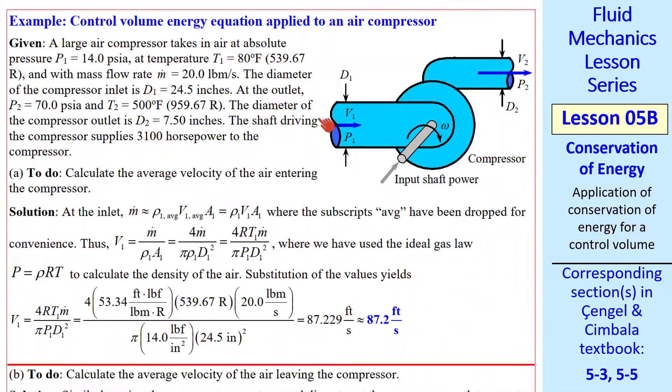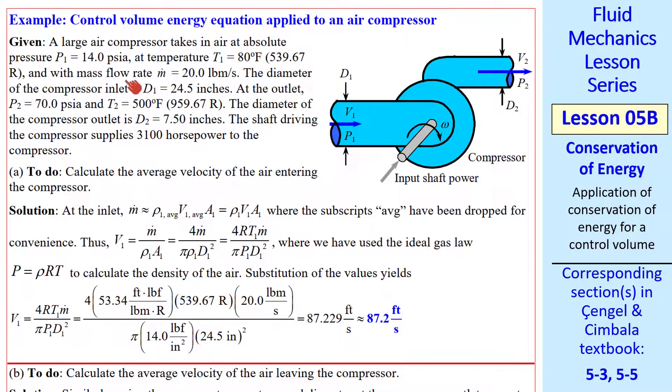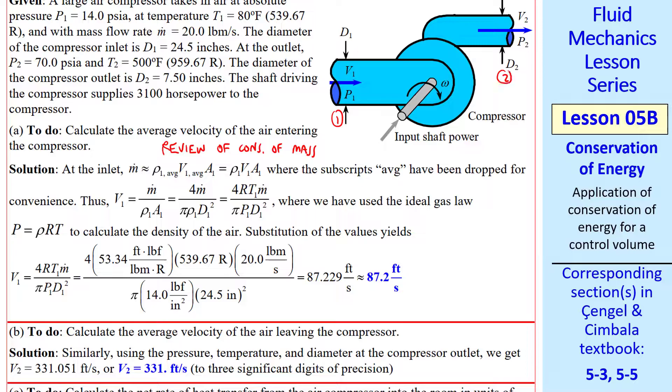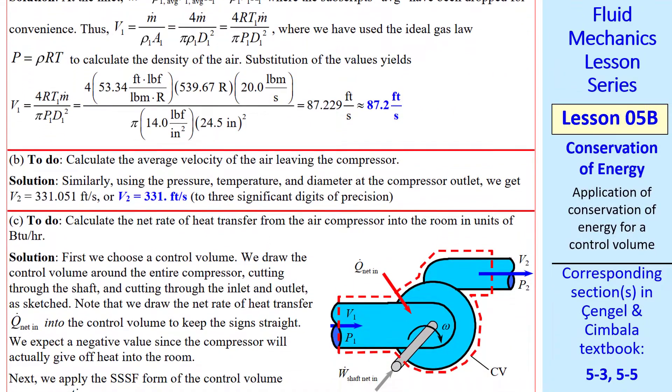Now we're ready to do an example. We can analyze things like compressors and turbines with our SSSF equation. Here we're looking at an air compressor. I give the mass flow rate, pressures and temperatures at the inlet and outlet, diameters of these pipes, and also the input shaft power coming into this compressor. We want to calculate the average velocity of the air entering the compressor. This is just a review of conservation of mass from the previous lesson. Part B is to calculate the average velocity of the air leaving the compressor. And then part C, we calculate the net rate of heat transfer from the air compressor into the room in units of BTU per hour.